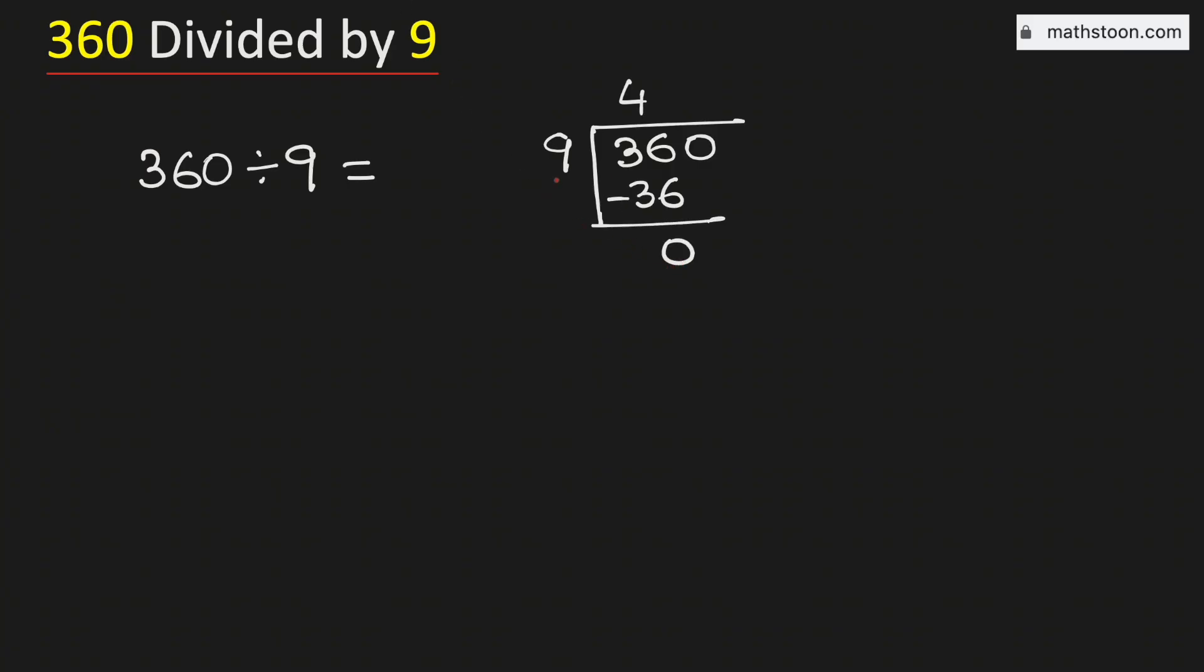Now see that 0 is less than 9, that is why we will bring down this number 0 here. But see that this is the number 0, so we can remove this 0.